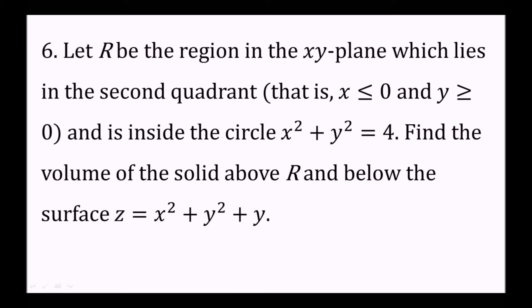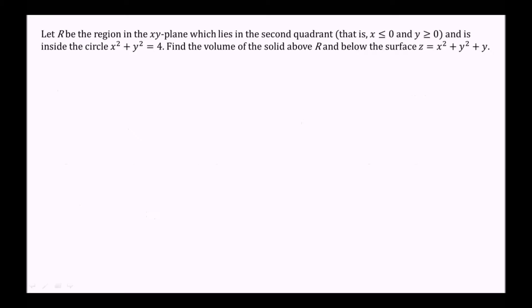Let r be the region in the xy plane which lies in the second quadrant, so x is less than or equal to 0 and y is greater than or equal to 0, and inside the circle x squared plus y squared equals 4. Find the volume of the solid above r and below the surface z equals x squared plus y squared plus y.